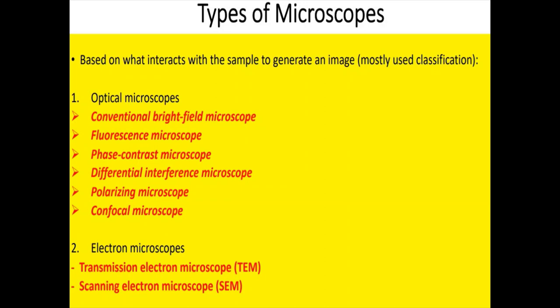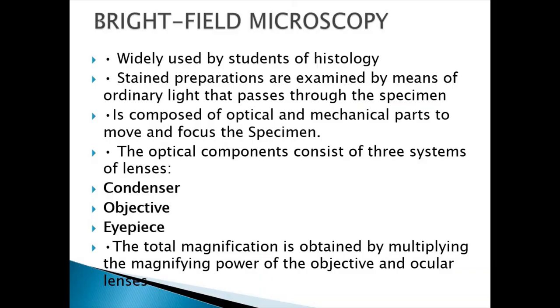Under optical microscopes, the subtypes include the conventional bright field microscope — the most commonly used — the fluorescence microscope, phase contrast, differential interference, polarizing, and confocal microscope. Under electron microscopes, there is the transmission electron microscope (TEM) and the scanning electron microscope (SEM). The bright field microscope is the one widely used by students in histology labs.